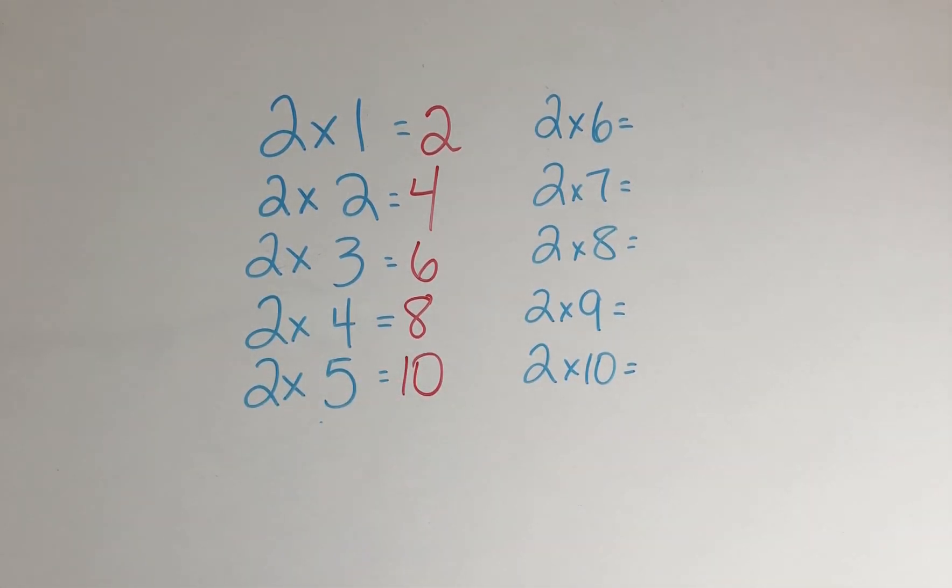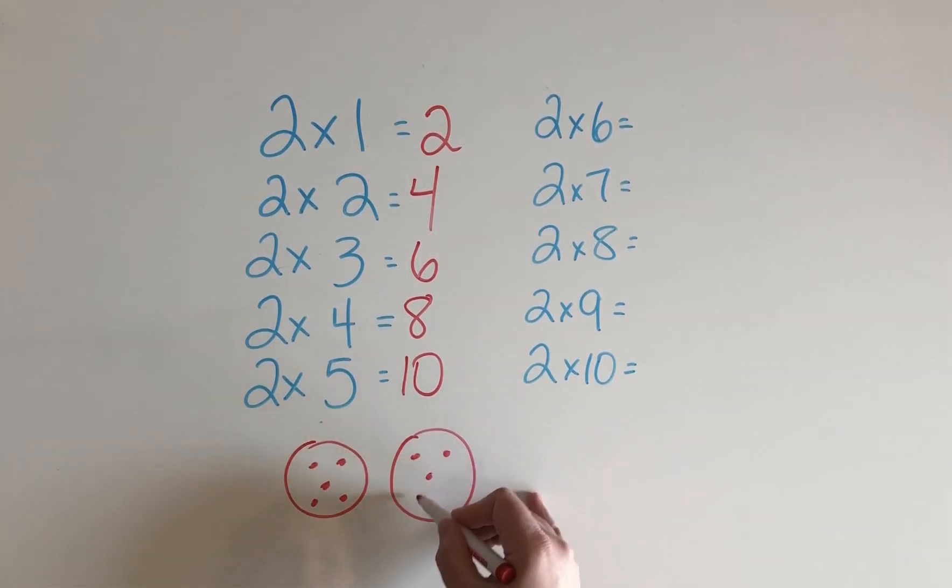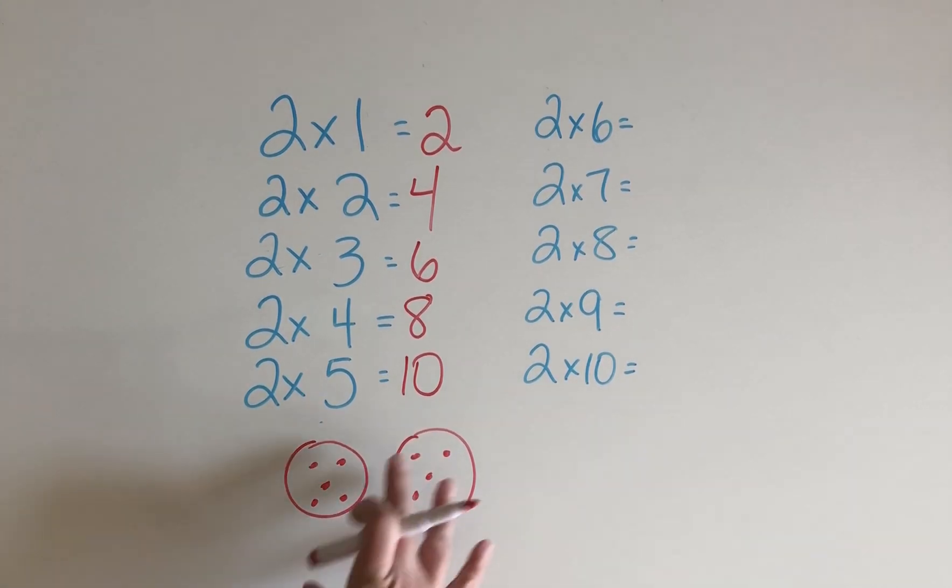So just so that you understand why we're doing this, let's draw a picture for 2 times 5. Here we have one group of 5, and here we have another group of 5. So this shows 2 groups of 5. We can also see that this is the double of 5 because it also shows 5 plus 5. So that's why we think about the addition doubles.